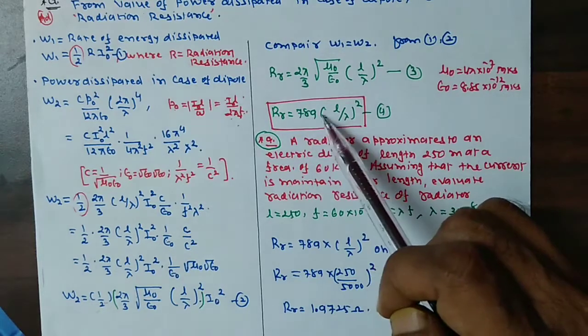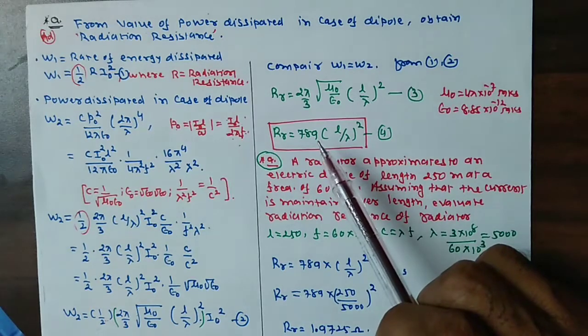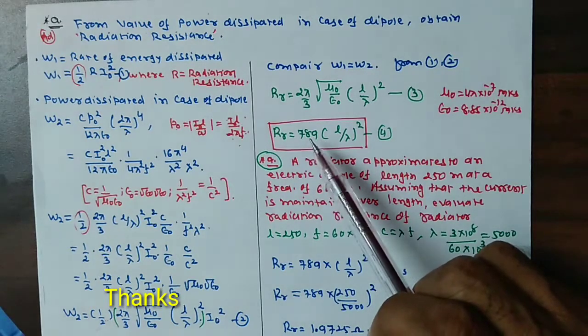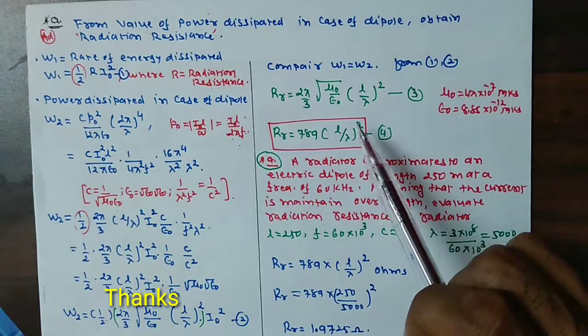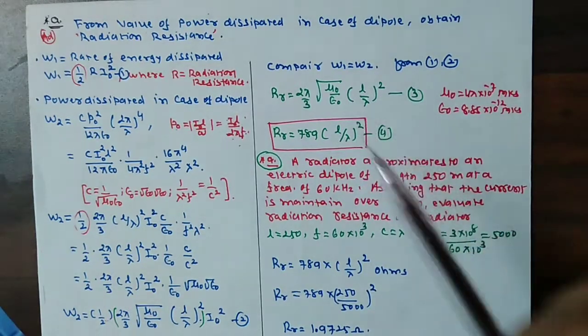So if you simplify all these values, it will be equal to 789. So in this way, value of radiation resistance will be equal to 789 times L square by λ square.